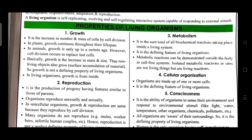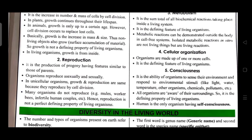Cellular organization: organisms are made up of one or more cells, and it is the defining feature of living organisms. Consciousness is the ability of organisms to sense their environment and respond to external environmental stimuli like light, water, temperature, other organisms, chemicals, and pollutants. All organisms are aware of their surroundings, so it is the defining property of living organisms. Humans are the only organisms having self-consciousness.